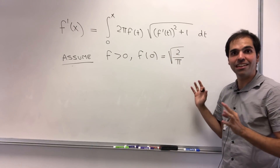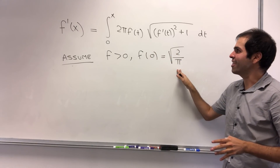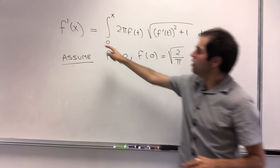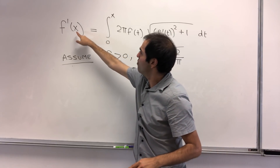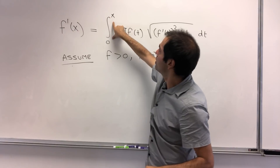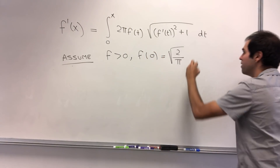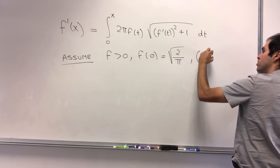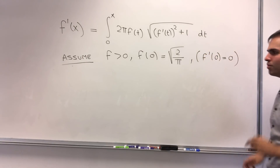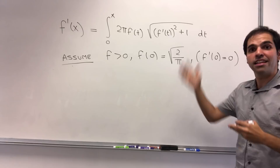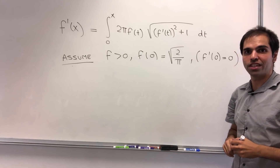Otherwise, there will be an integral that will be much harder if we don't require this. Moreover, notice: if you plug in f prime of 0, you get the integral from 0 to 0, which is 0. So a consequence is also that f prime of 0 equals 0. And with that said, now let's try to solve this differential equation.